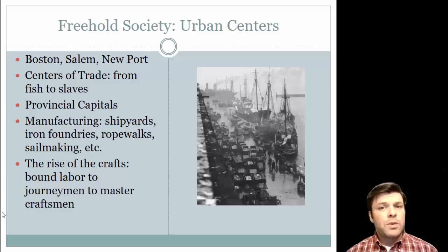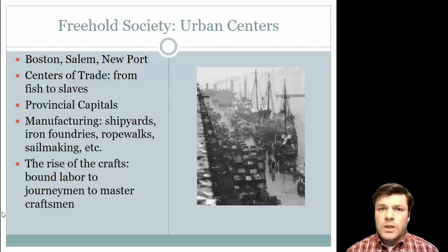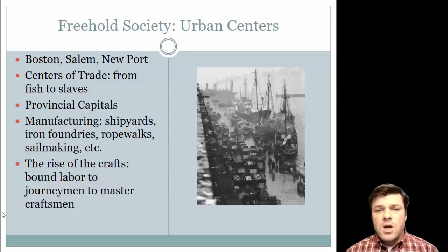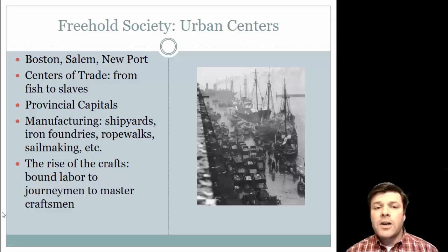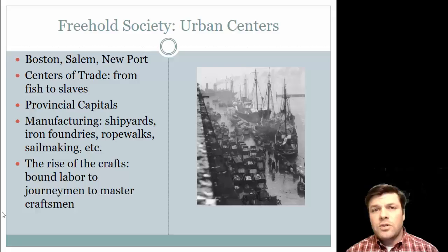As the economy begins to diversify, you also begin to see the springing up of urban centers — cities. Simply put, cities were centers of trade. Think of cities that really define that part of the country: Boston, Newport, Salem — everything from fish to slaves were traded and exchanged in these provincial capitals. They also become centers of production. It's no coincidence that Boston becomes very well known for its shipyards, its iron foundries; ropes and sails were made in Boston — a place where things are produced in addition to where things are traded and sold.